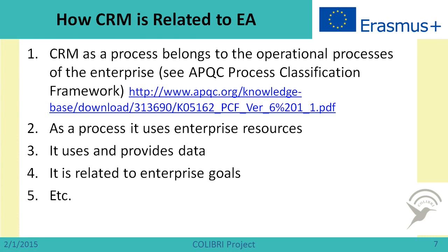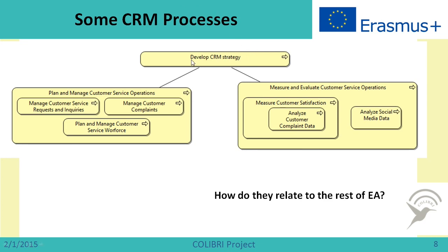As a process, CRM uses enterprise resources, uses and provides data, and is related to enterprise goals. Here you can see a fragment of enterprise architecture which involves the process 'develop CRM strategy,' the process 'plan and manage customer service operations,' and 'measure and evaluate customer service operations.' There are sub-processes such as 'manage customer service requests and inquiries,' 'manage customer complaints,' 'plan and manage customer service workforce,' and also sub-processes like 'measure customer satisfaction,' which includes 'analyze customer complaint data' and 'analyze social media data.' These are all different activities we perform in enterprise customer relationship management.